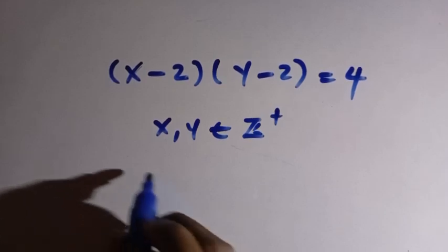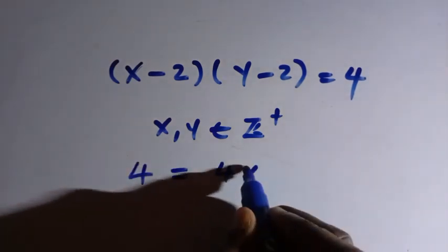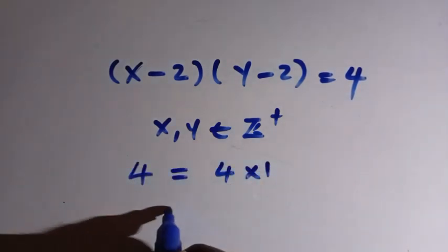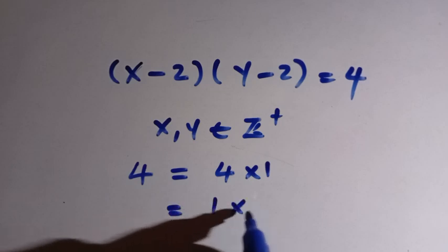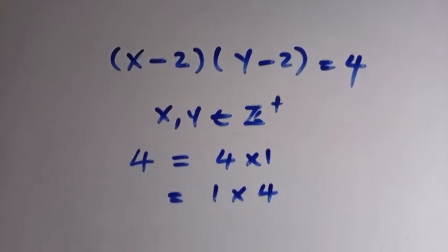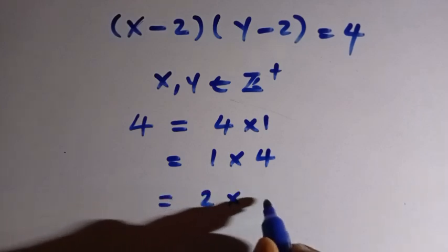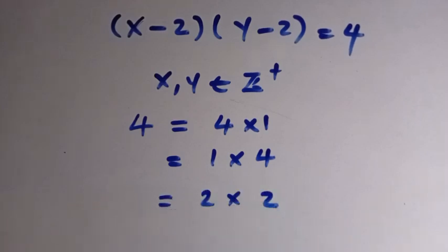And say we have 4, so this 4 is equivalent to 4 times 1. We can say we have 4 as 1 times 4. And again, we can have 4 as 2 times 2. So these are the only things we are going to have here as far as x and y are members of positive integer.